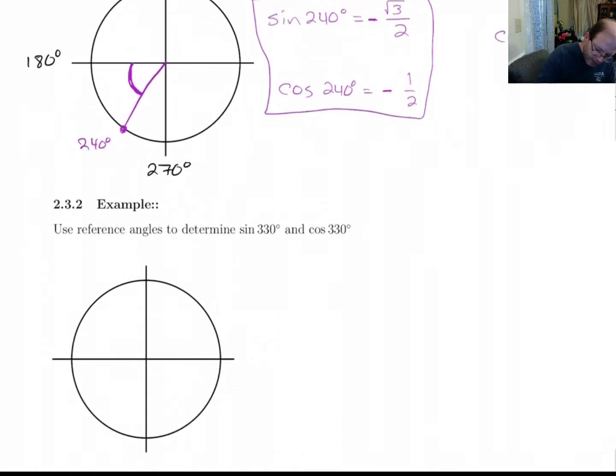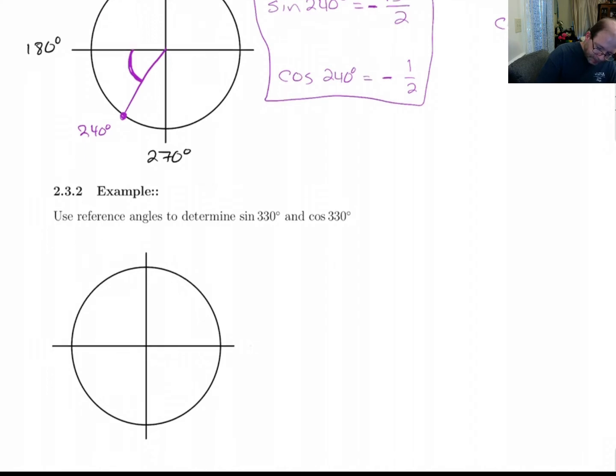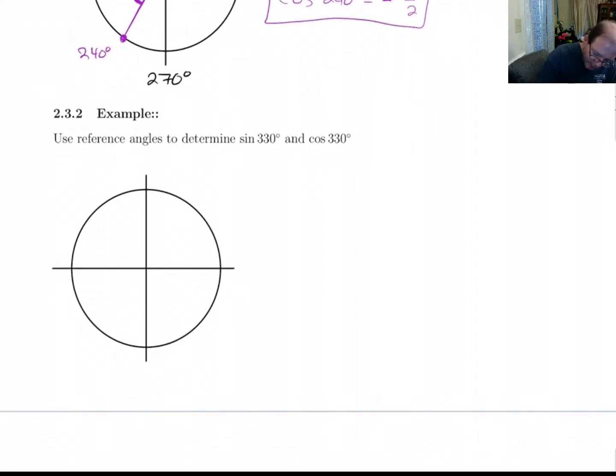All right. Let's do another one. Use reference angles to determine sine and cosine of 330. I'm going to do the same thing here. Now, 330 is between 270 and 0, or 360 degrees.